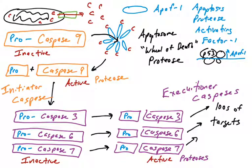This all started from cytochrome C exiting the mitochondria, which was covered in the previous video. Once cytochrome C enters the cytoplasm and joins with APAF1, this chain reaction — from the apoptosome to caspase-9 to caspases-3, -6, and -7 — results in the destruction of the cell and apoptosis. In another video, we'll talk about the substrates of the executioner caspases and the extrinsic pathway of apoptosis, which uses a different initiator caspase.